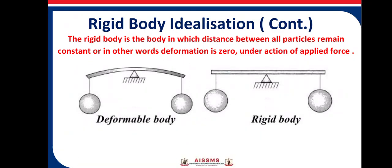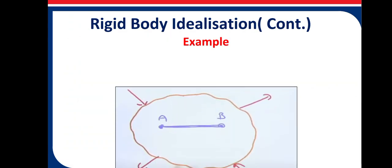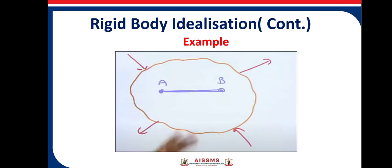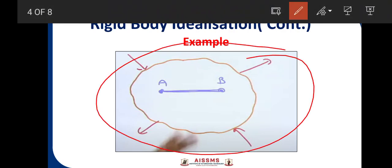For example, let us say this is a rigid body which is subject to a lot of forces from all directions. And there are two points inside the body, let us say point A and point B.